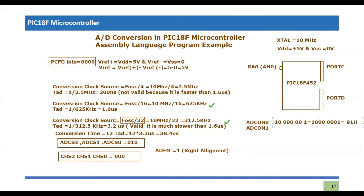The next important register is ADCON1. The ADFM bit is 1, then ADCS2=0, then two don't-care bits set to zero, and then the PCFG bits which are all four zeros. So ADCON1 equals 0x80.